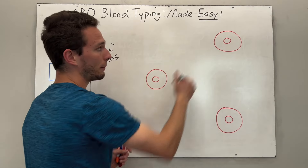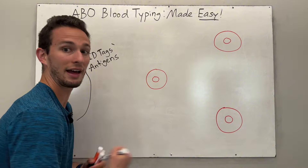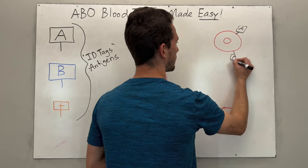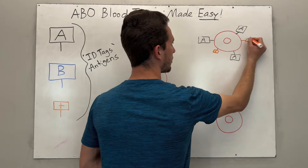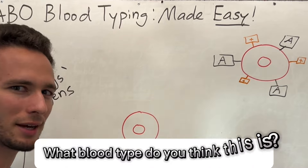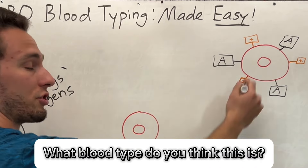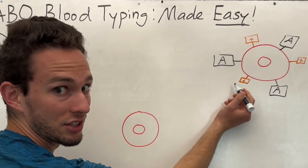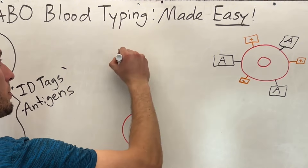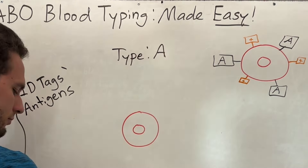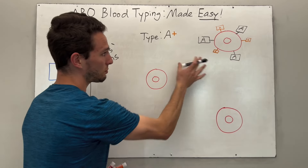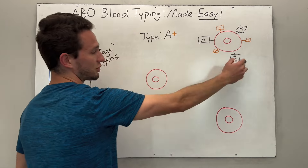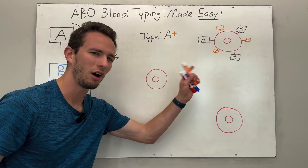Let's take an example of one blood cell with the following ID tags or antigens. If you look at this cell, it has the A antigen and the positive antigen — so this person would be type A positive. In this person, every single one of their trillions of red blood cells would look exactly the same as this one.